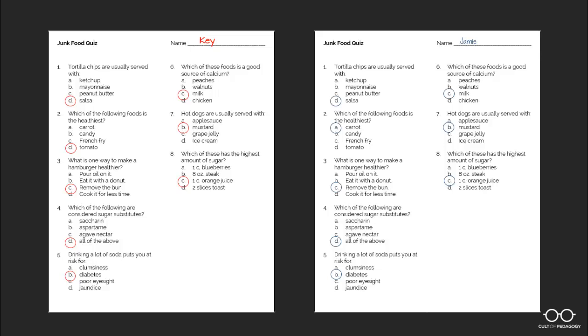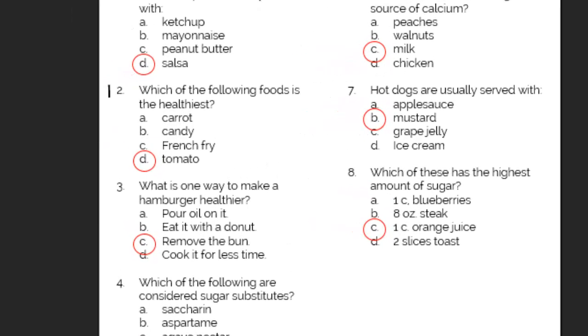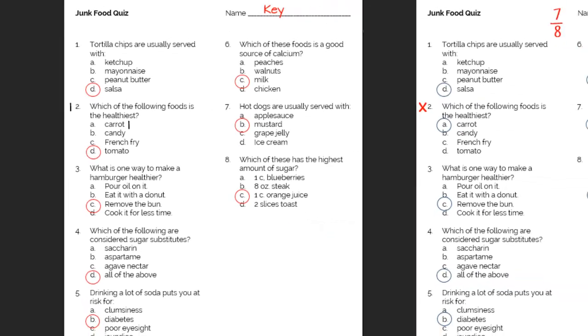So here's your first quiz to grade. It's Jamie's and she has gotten one question wrong, number two. Now instead of just flipping Jamie's test over and moving on to the next one, just go ahead and put a tally mark next to number two on your answer key and put another one next to item A, the one Jamie chose incorrectly.